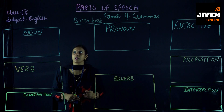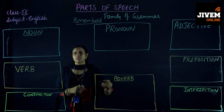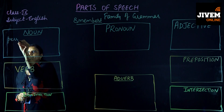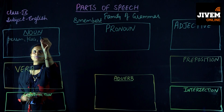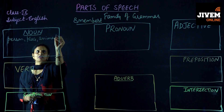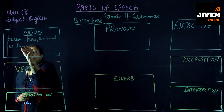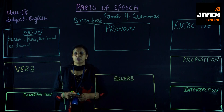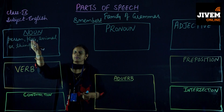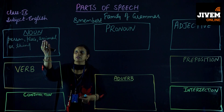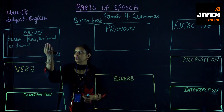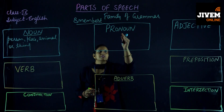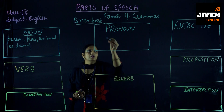The head of the family and the first member is noun. What do you mean by a noun? Noun is the name of a person, place, animal, or thing. When you are talking about any person, place, animal, or thing, that comes into the category of noun. For example: Ram, Shah, Mohan, Delhi, Mumbai, Calcutta, rat, cat, dog, bag, bottle, etc.